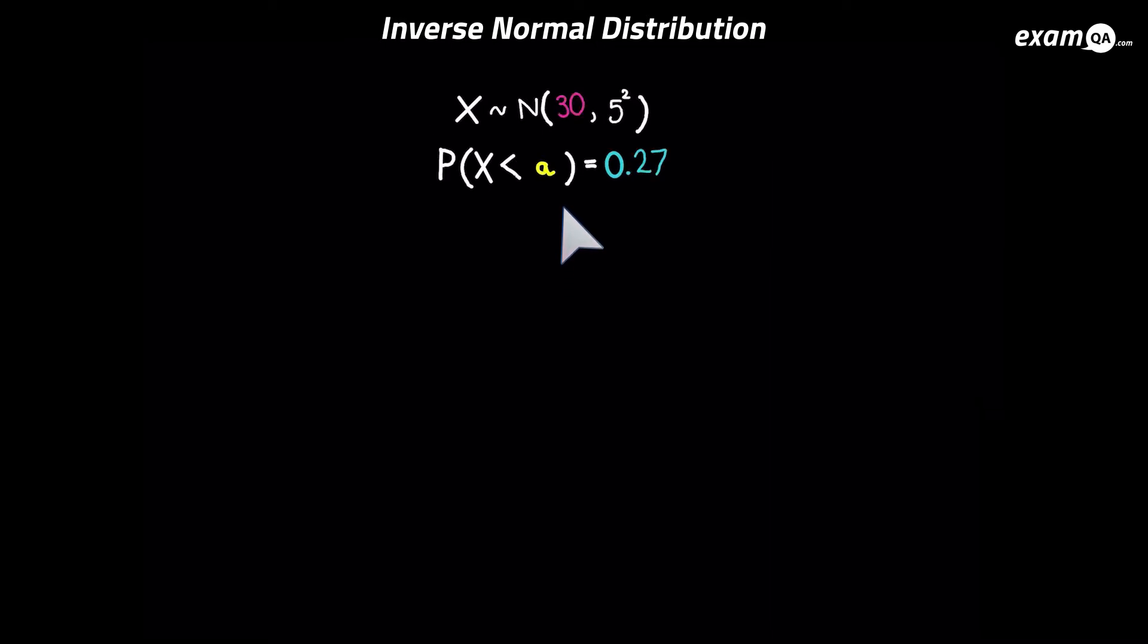Let's try another one. And again, it's the exact reverse of what we've been doing. So you're just simply going to do the inverse norm of this number 0.27. So at the moment, our a value is somewhere here on the left hand side. We know it's not the right part of the graph because the area is less than 0.5.